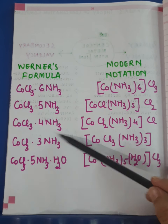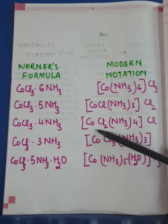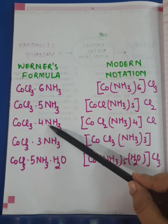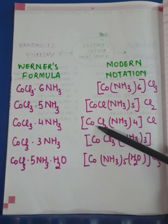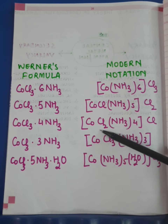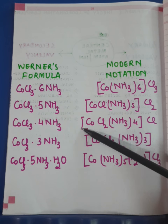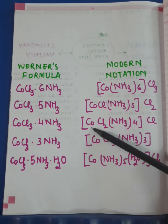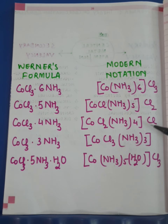The third example is CoCl₃·4NH₃. Keeping in mind that cobalt's coordination number is six, four ammonia molecules are present, so two chlorine ions will be bonded with cobalt via primary as well as secondary valency, behaving as ligands. Four ammonia molecules and two chloride ions are enclosed in the square bracket with cobalt forming the coordination sphere, and the one remaining Cl — bonded only via ionizable primary valency — forms the ionization sphere.